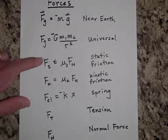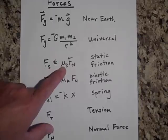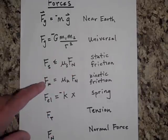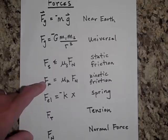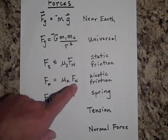We'll also have two types of friction, static friction, which is going to be less than or equal to the coefficient of friction times the normal force. And then the kinetic force of friction, which is equal to the coefficient of kinetic friction times the normal force.